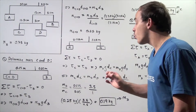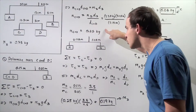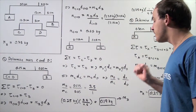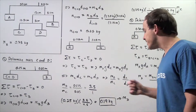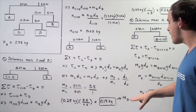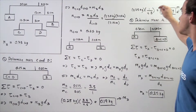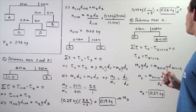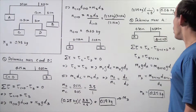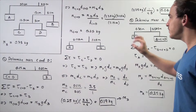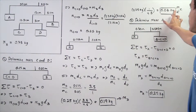The ratio of mass D to mass C is 3.5 to 1. To find mass D, we take the combined mass of 0.25 kg and multiply by 3.5 divided by 4.5 (where 4.5 is simply 3.5 plus 1), giving approximately 0.19 kilograms for mass D. For mass C, we multiply 0.25 kg by 1 divided by 4.5, giving approximately 0.06 kilograms. We could also have found mass C by subtracting mass D from the total combined mass, yielding the same result.